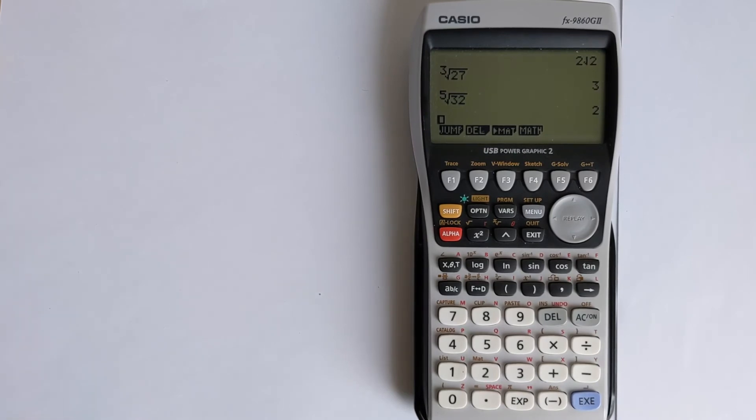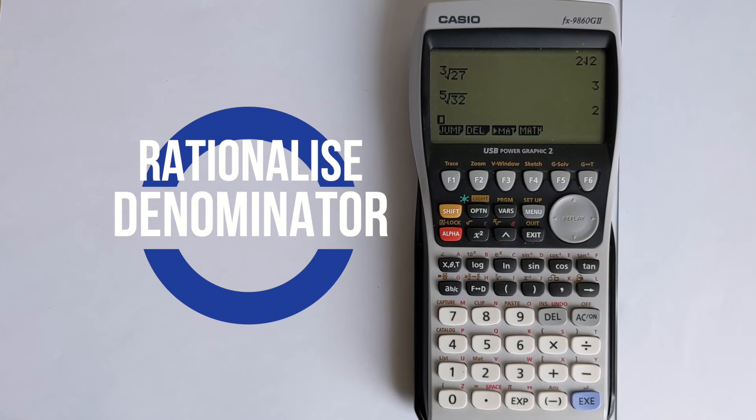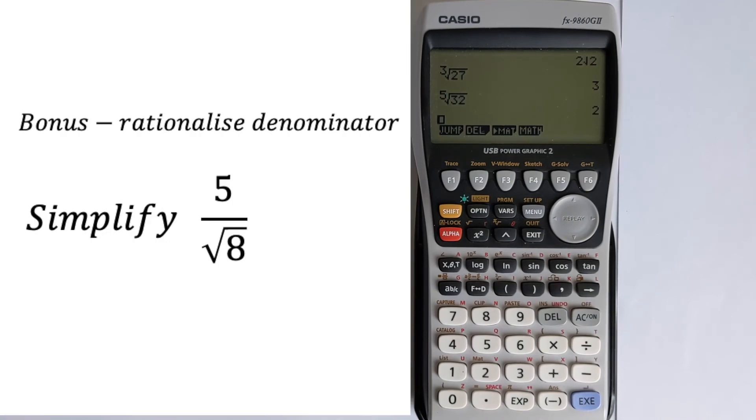So the other trick that this calculator can do, because this version can actually do exact values, you can actually rationalize a denominator. So for example, what we can do is we can simplify 5 over root 8.